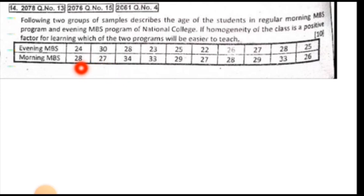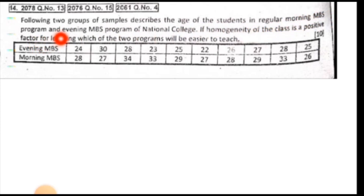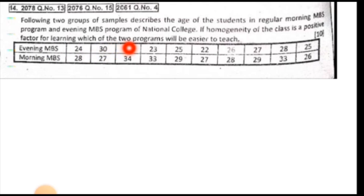The following two groups of sample describe the age of the student in regular morning IBS program and evening IBS program of national college. If homogeneity of the class is a positive factor for learning, which of the two programs will be easier to teach?